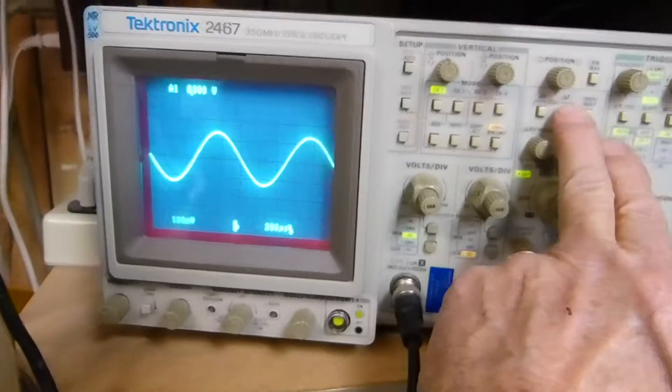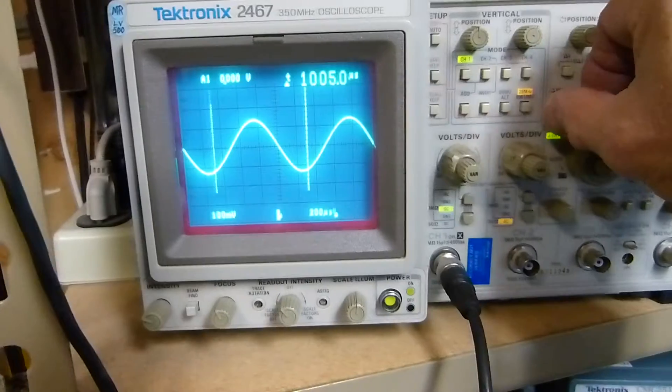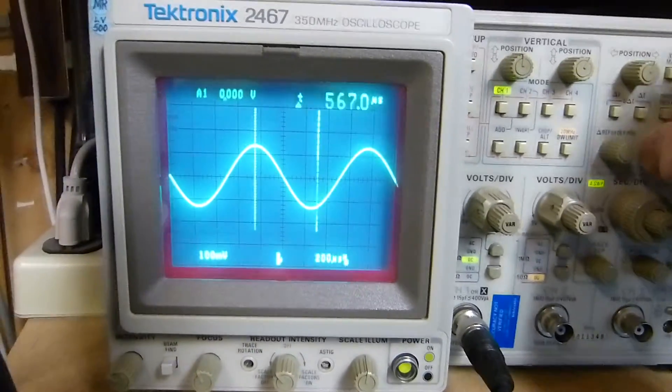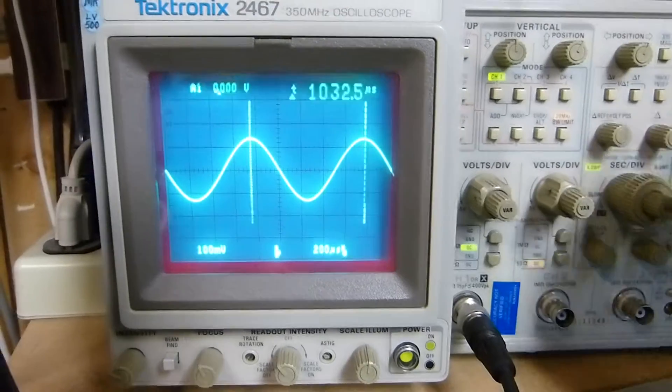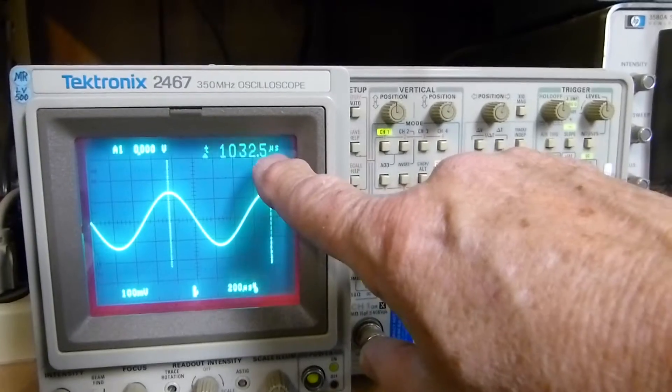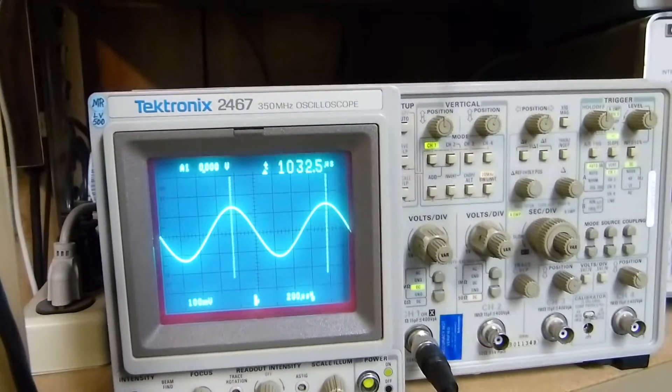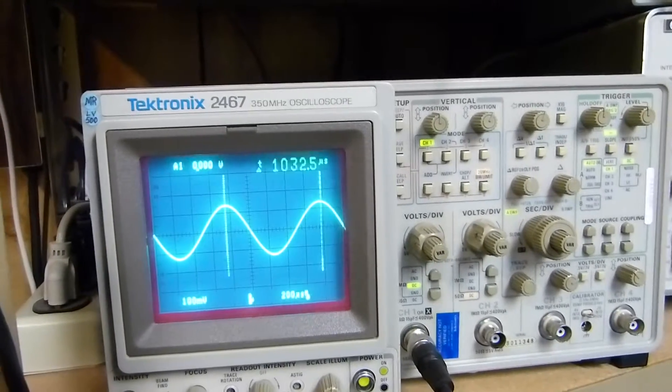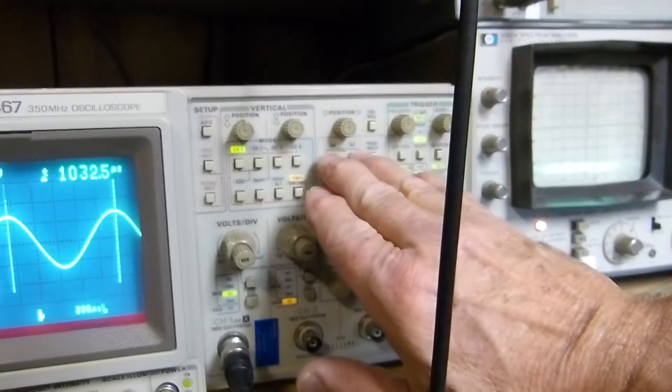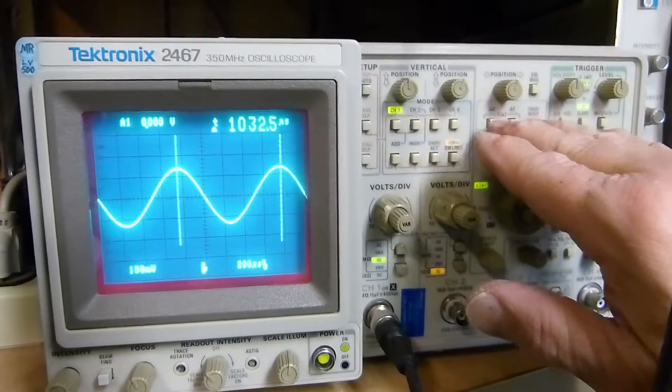See this delta time right here? If I press that, the cursors come up and I can move them wherever I want. Let's say I put one there and one right there, which would be one cycle. It tells me that it's 1032.5 microseconds. I'm putting in about 985 Hertz. If I press both of these buttons at the same time, it'll give me the reciprocal of that: 968 Hertz.